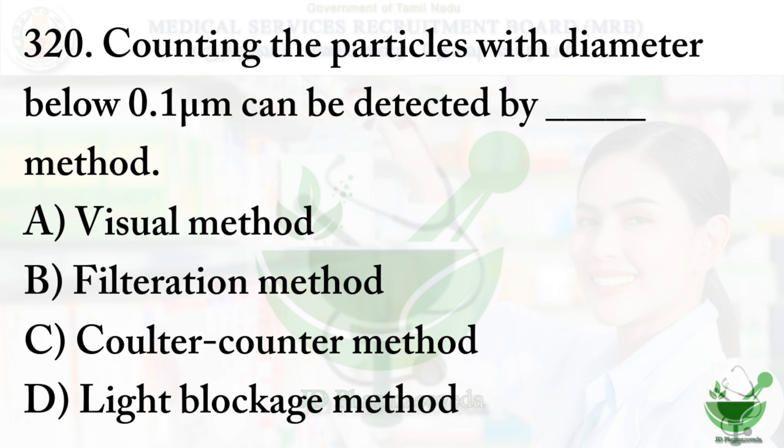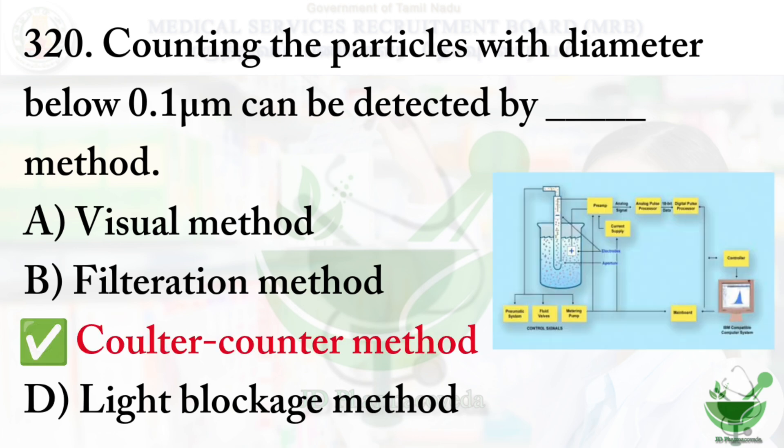Question number 320: Counting particles with diameter below 0.1 micrometer can be detected by which method? Option A: visual method, Option B: filtration method, Option C: Coulter counter method, Option D: light blockage method. The correct answer is Option C, Coulter counter method.